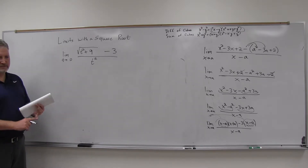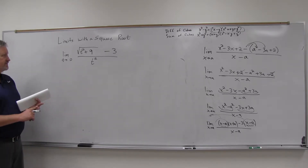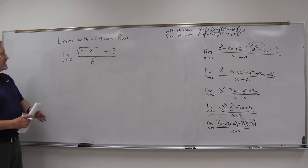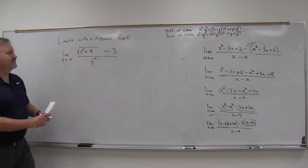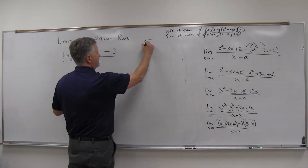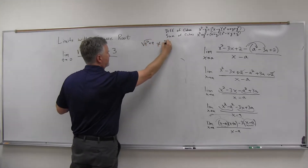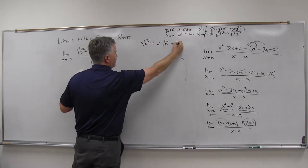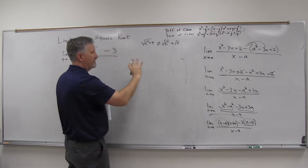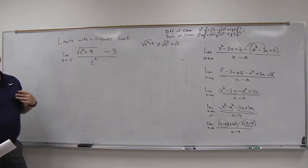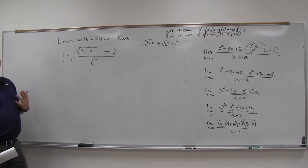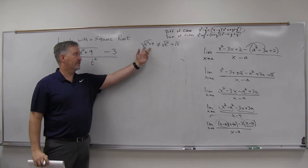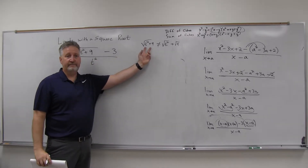Factoring doesn't work. I should point out that unfortunately the square root of t squared plus nine does not equal the square root of t squared plus the square root of nine. That's something we want to try a lot of times, but it just doesn't work. You can't separate a square root when you have a sum like that.